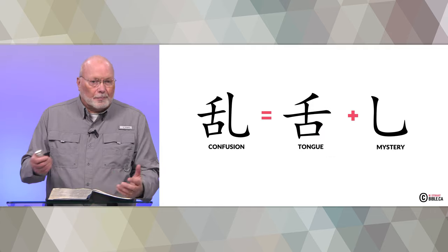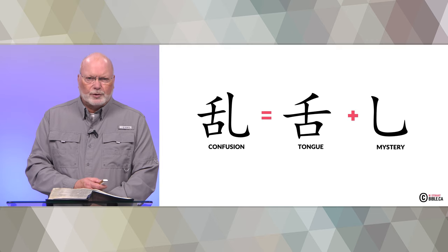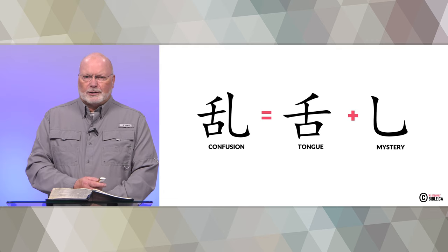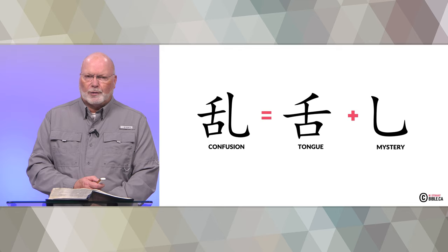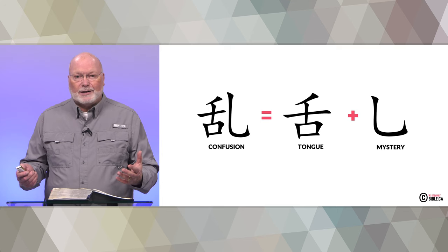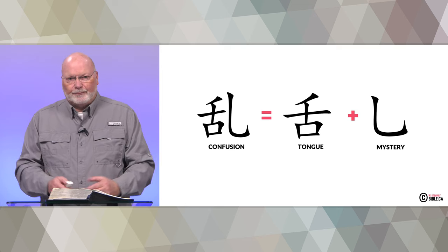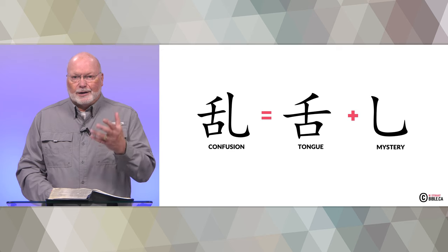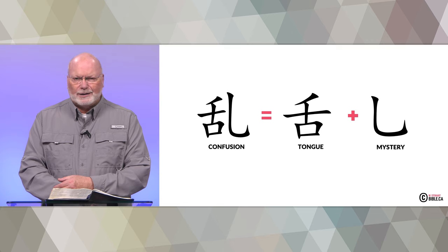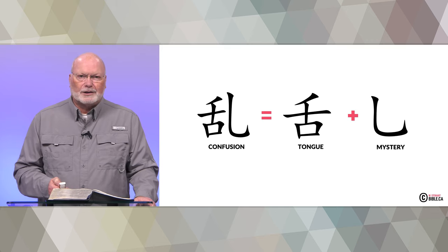Back to Genesis chapter 11 and the Tower of Babel — we've got the Chinese symbol for 'confusion,' made up of two characters: one meaning 'tongue' and another for 'mystery.' For some mysterious reason, we can't understand each other — that's exactly what happened in Babel. God confused the languages to scatter the people, so confusion is represented by tongues and a mystery. Perhaps part of the mystery is: why can't I understand you? Another parallel, this time from Genesis chapter 11.